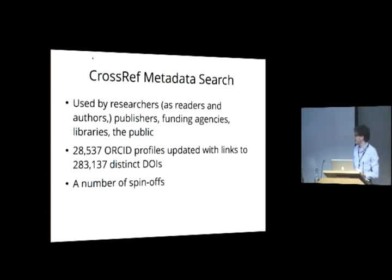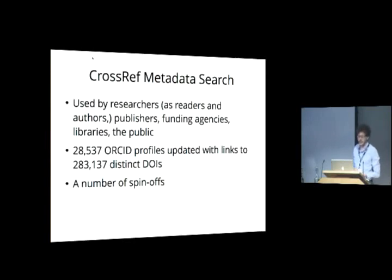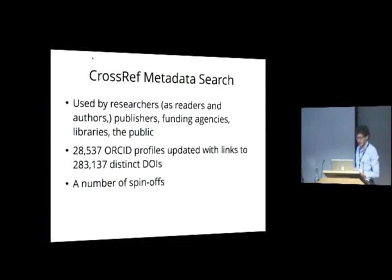There's a feature of CrossRef Metadata Search that allows anyone signed in with an ORCID profile to add DOIs to their ORCID profiles. We've had just under 30,000 people do that, and we've actually added about 300,000 unique DOIs to ORCID profiles. That probably represents many more links between DOIs and ORCIDs, since papers tend to have more than one author. The tool itself has actually inspired a number of spinoffs, which I'll explain in a minute.